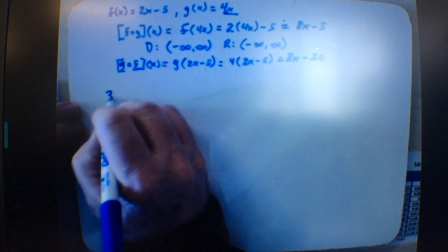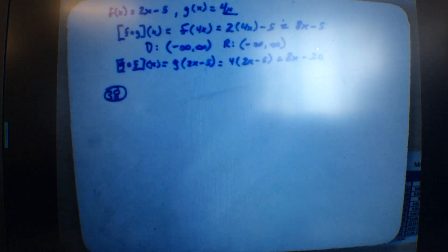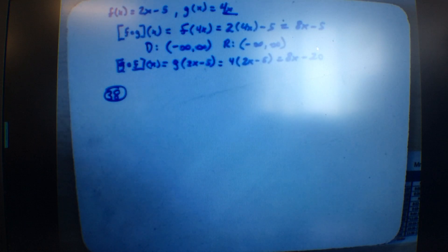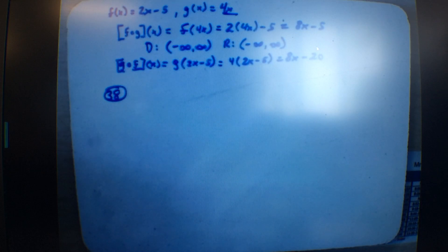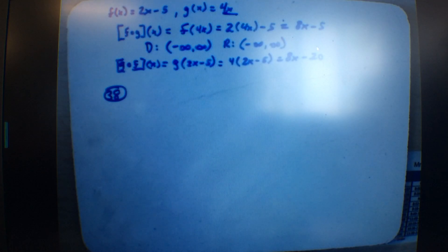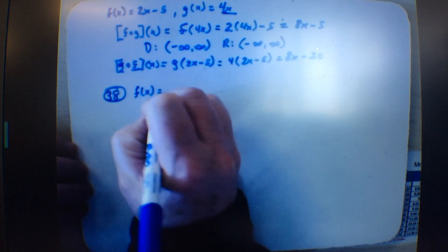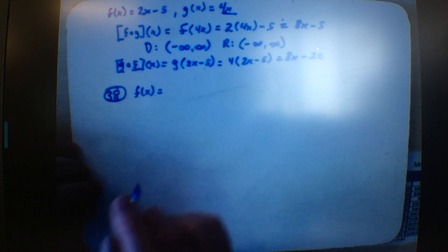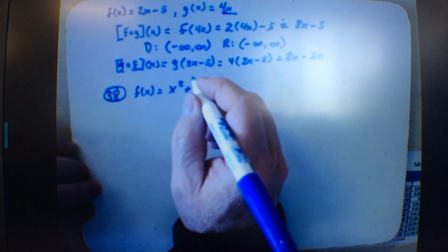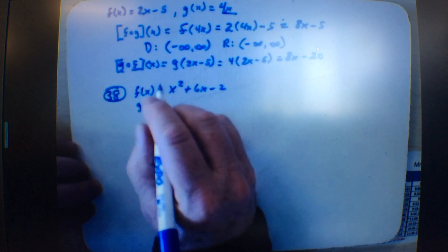Let's look at number 38. It says f of x equals x squared plus 6x minus 2, and g of x equals x minus 6. Find f of g of x: put x into g to get x minus 6, then take f of (x minus 6). That means (x minus 6) squared plus 6 times (x minus 6) minus 2.